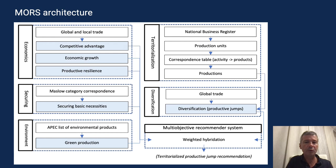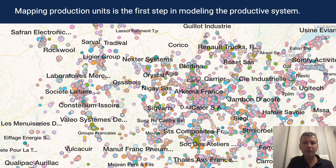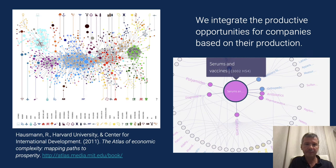The first part is the territorialization of production data: we map companies using the SIRENE database of French companies. Companies of four regions in France are classified by sector of activity, and from a table of correspondence we obtain the theoretical productions associated with each company, identifying potential productive capabilities. To understand productive opportunities, we rely on the Harvard-provided input-output table of proximity between product classes — the product space — which visualizes productive opportunities associated with types of products.